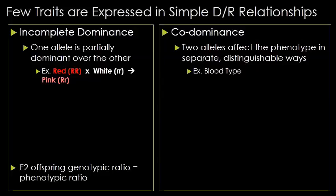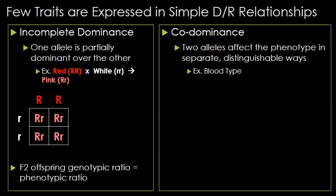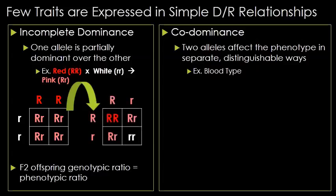The first is incomplete dominance. In an incomplete dominant situation, the heterozygous condition expresses a third phenotype which is different from either homozygous condition. The most common example is snapdragons. If you breed a red snapdragon with a white snapdragon, they produce a pink snapdragon. But if you breed two of those pink heterozygous snapdragons, you end up seeing offspring that are red, pink, and white. The F2 genotypic ratio matches the F2 phenotypic ratio, giving a one to two to one relationship.